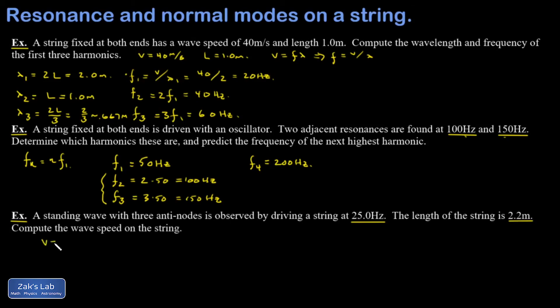Remember to get the wave speed, I need the frequency and the wavelength. I've already got the frequency of these waves. That's 25 hertz. Now I need the wavelength.